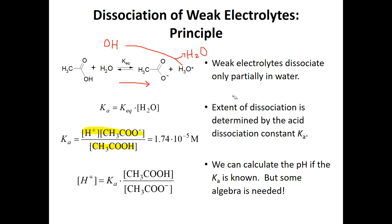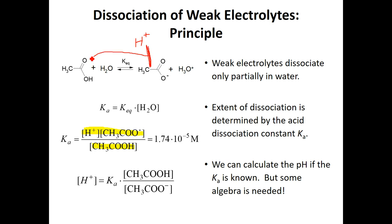Now the reverse: if we add a strong acid like hydrochloric acid, we're adding protons to the system. This strong acid will combine with any free hydroxide, and the protons will also combine with the conjugate base acetate to form more acetic acid. That pulls the equilibrium in the reverse direction, producing more acid and more protons — lowering the pH.